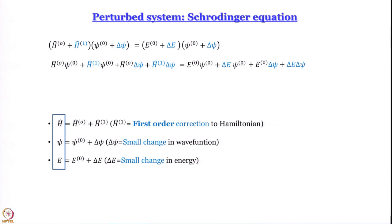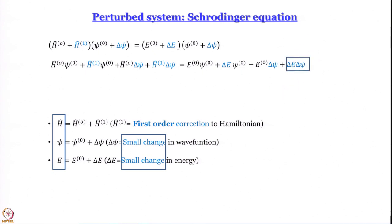Let me emphasize the key point: the changes δE and δψ are small. When you multiply a small quantity by another small quantity — say 10⁻³ times 10⁻⁵ — you get 10⁻⁸, which is smaller than either factor. So δE·δψ is going to be really, really very small and we are going to neglect it. Remember, we are learning approximation methods; if we do not neglect any terms, there is no point in this exercise.